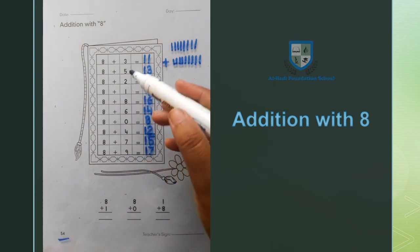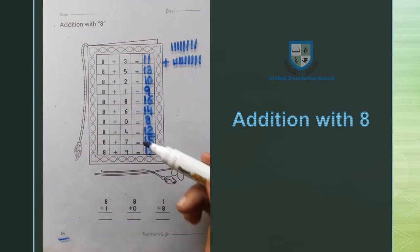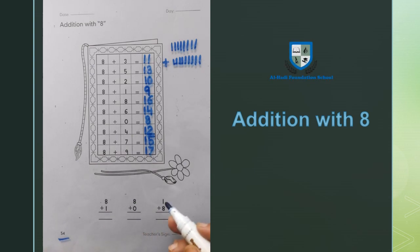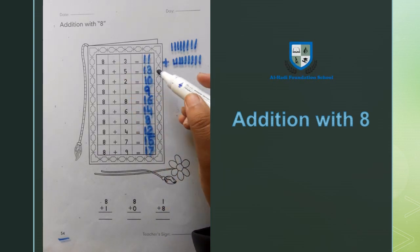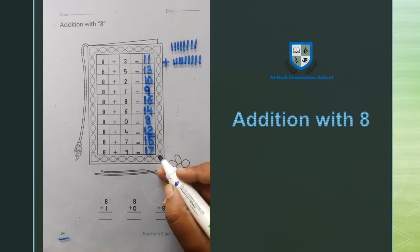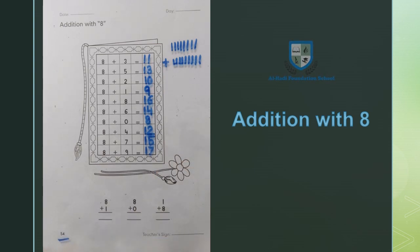So we have added 8 with all the numbers. Now you have to solve 8 plus 1, 8 plus 0, and 1 plus 8 in the same way. Write the answers in the empty blocks and complete book page number 54.